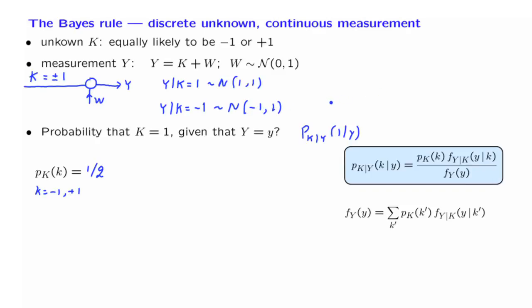So if we are to plot the density of Y, that density, of course, will depend on what the value of K was. And if K is equal to 1, then we will obtain a normal that has a mean of 1, so it's centered here. But if K is equal to minus 1, then our observation will be a normal with unit variance but centered at minus 1.